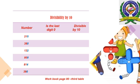The last number we have is 390. Is the last digit of 390 zero? Yes — that means we will put yes in the first column and yes in the second column also.